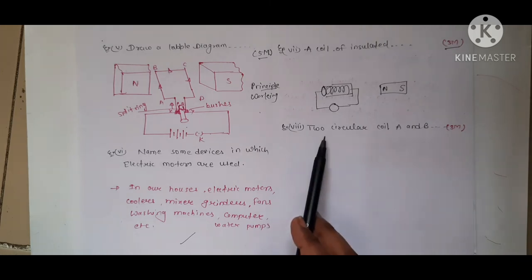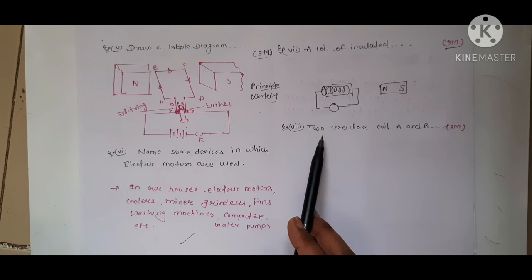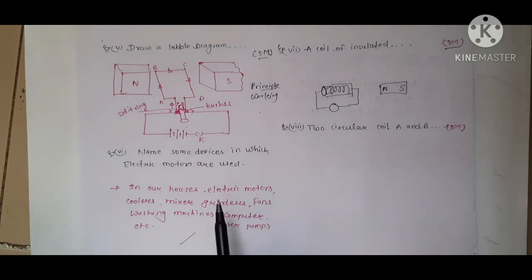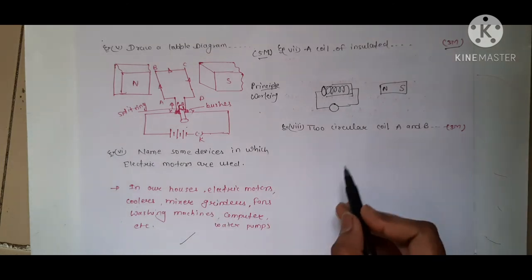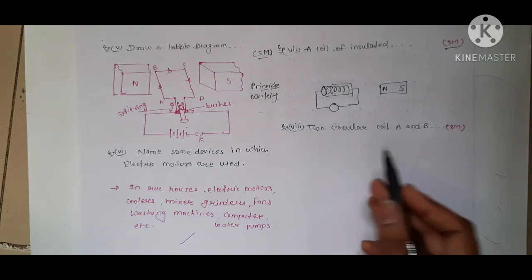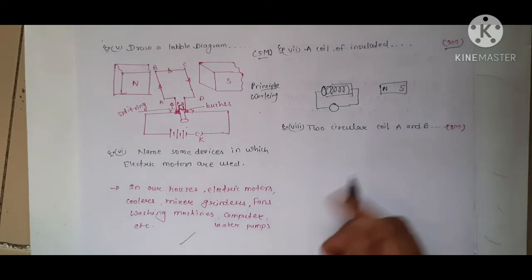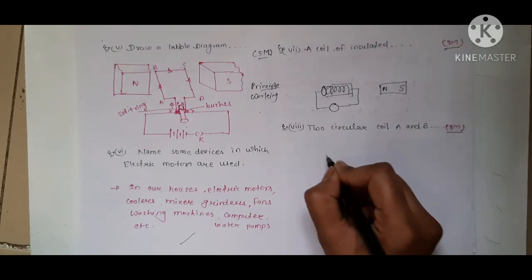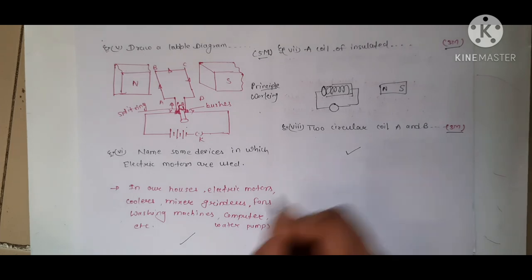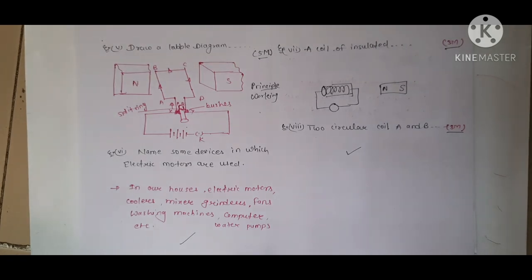Question number 8: two circular coils A and B are placed close to each other. If the current in coil A is changed, will some current be induced in coil B? Give the reason. This is also fully explained just a while ago. This is a three-mark question, so you need to write the full explanation.